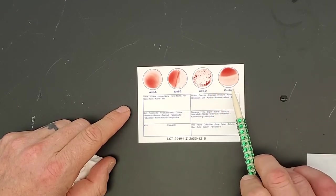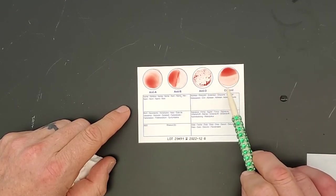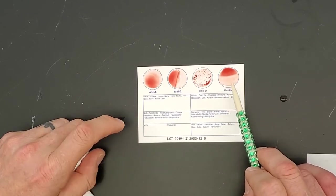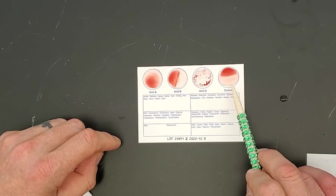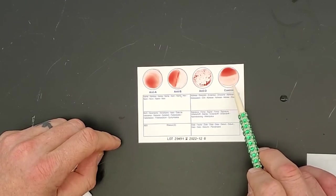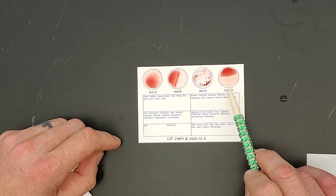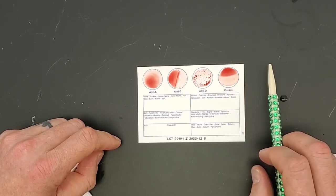Last, but not at all least, is the control circle. There's no reaction here, and that's what we expect in the control circle. If there had been a reaction here in the control circle, I would have to throw out this card and say that the test was inconclusive. It was a bad test. And that's it. That's blood typing.